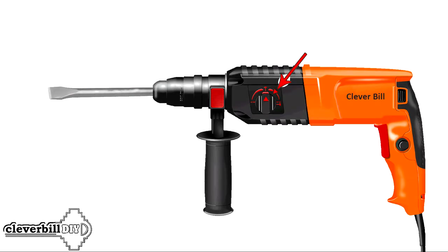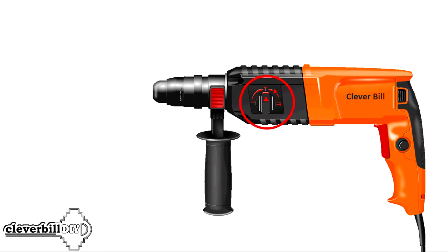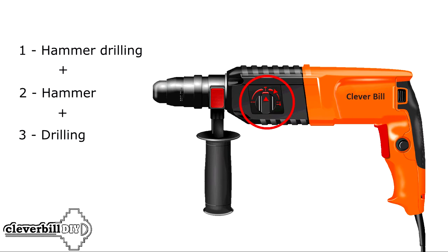On some models, on the scale for switching modes, you can find a fourth mode designation. This mode is used for unhindered rotation, positioning the bit to the desired position. Depending on the model, you need to select the modes you will actually use. Some models can only drill with chiseling and chiseling, while others can also simply drill. For many homeowners, the best option is a universal hammer drill with three modes, given that you never know what tasks may be posed in the future.